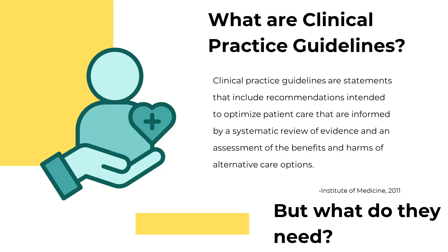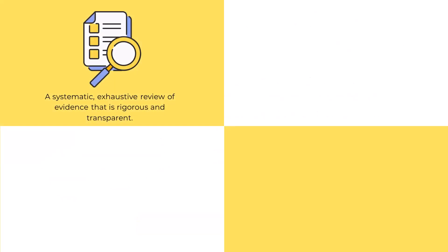Let's look more closely at what clinical practice guidelines need in order to actually meet this definition. First, clinical practice guidelines are informed by a systematic review of the evidence. Systematic reviews follow a rigorous method to ensure that all evidence has been located and evaluated, and make that method transparent so others can replicate and evaluate their work. Clinical practice guidelines take these systematic review findings and go one step further, using the findings to make recommendations for patient care.